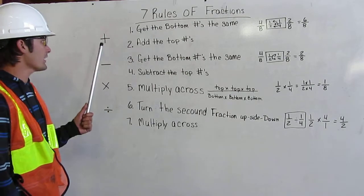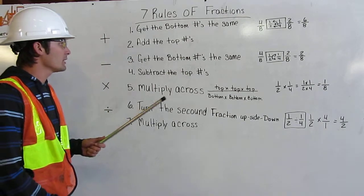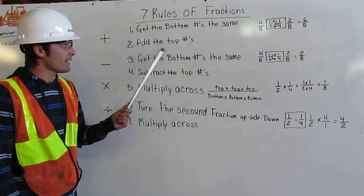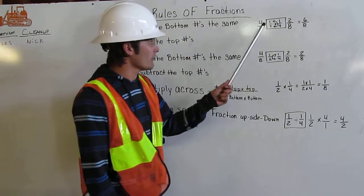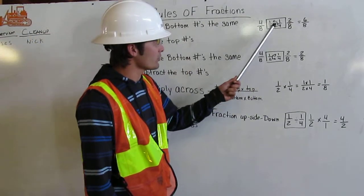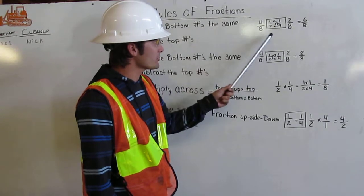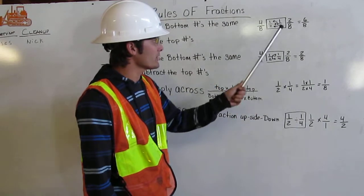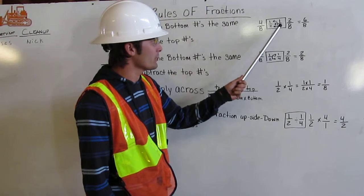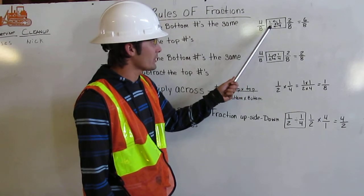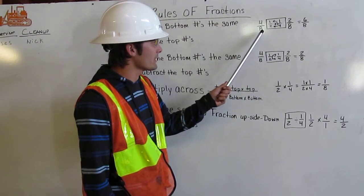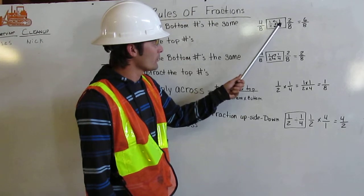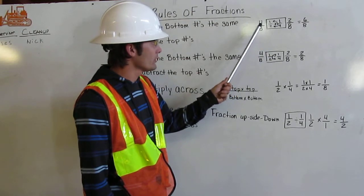The first thing we're going to do is add fractions. I'm going to get my bottom numbers the same, and then I'm going to add the top numbers. Over here I have one-half plus one-quarter. I drew a box around those fractions to show that I'm going to change them. So the first thing I'm going to do is multiply 4 times 2, my bottom numbers, and I'm going to get 8. And the second thing I'm going to do is multiply 4 times 1, and I'm going to get 4.